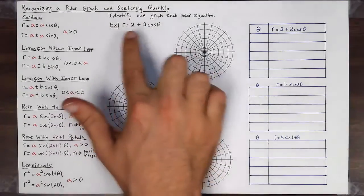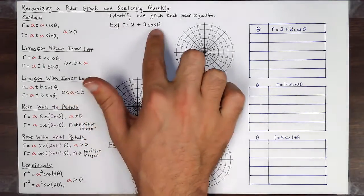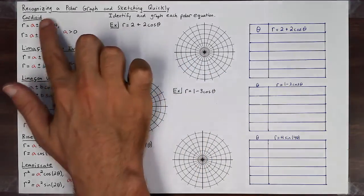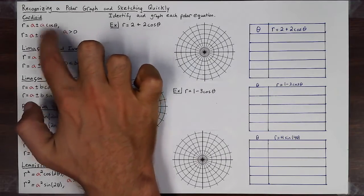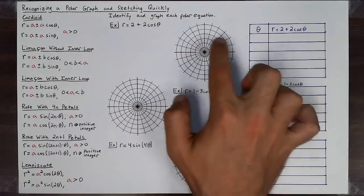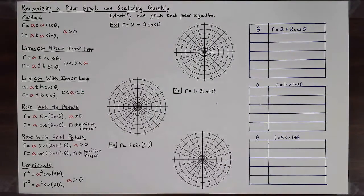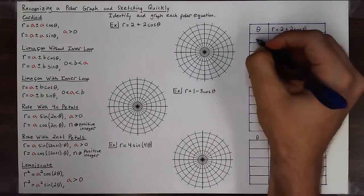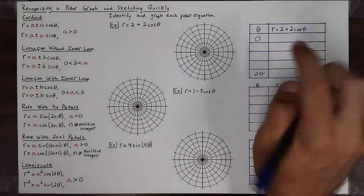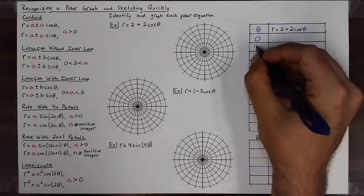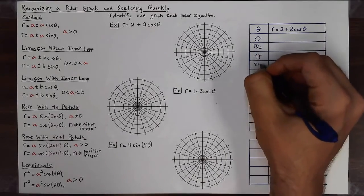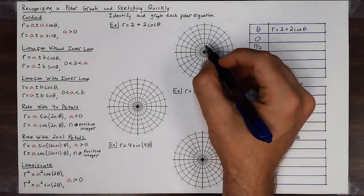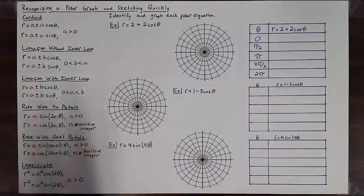For the rest that aren't easy to convert from polar to rectangular, here is a nice way to sketch quickly. First, try to recognize the graph. Here I have r = 2 + 2cos(θ). I see addition, and comparing the two numbers — they're both the same — so I know I'm dealing with a cardioid. Knowing that, I don't need many points to sketch the picture.